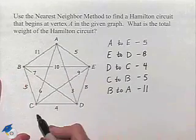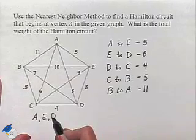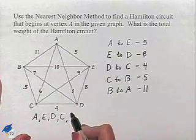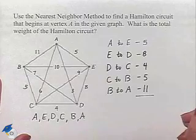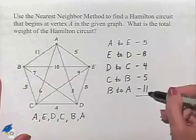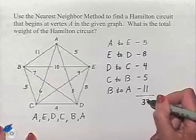So if we list the Hamilton circuit, we're going to have A, E, D, C, B, and back to A. To find the total weight of the Hamilton circuit, we'll add up each of the individual weights, and that sum is going to be 33.